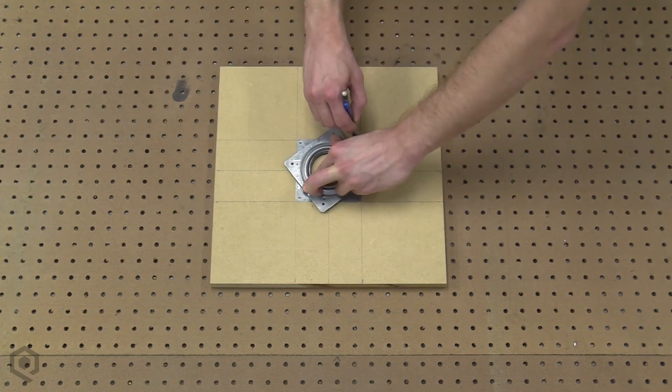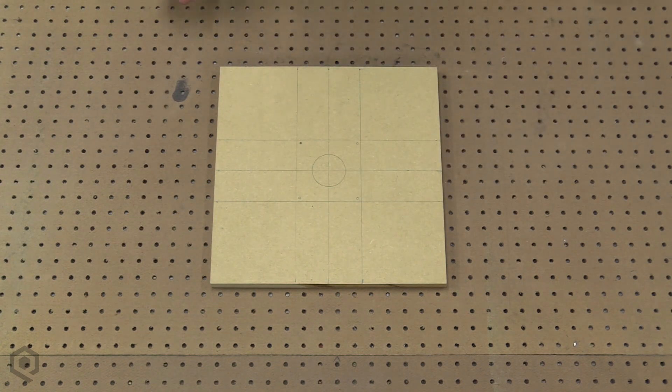Next, mark where you're going to put the screws that secure the Susan to the wood. I also trace the center, pretty much just for fun.